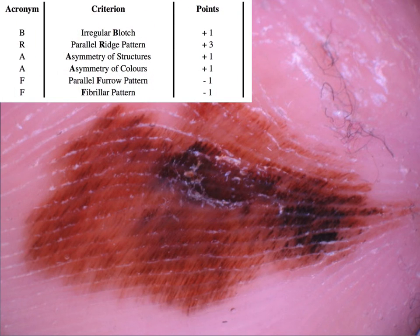Another case displaying a fibrillar pattern, which accounts for minus one point for melanoma, but we also have asymmetry of structures and asymmetry of colors. Calculating our score, we again have a total of plus one, which means melanoma.